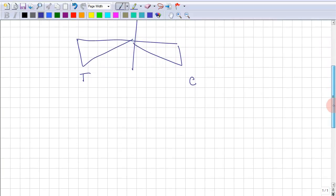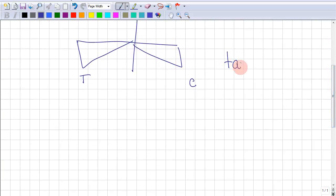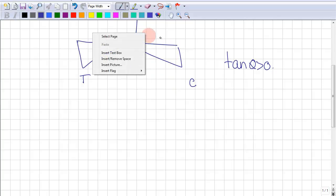But when you look at the restriction, tan theta is greater than 0, you know that the special triangle cannot be in quadrant 4 because that is where tan is negative. So this is not an option.